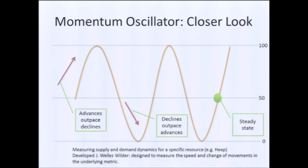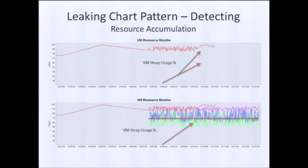Why not just set a threshold directly on the heap size — say, alert at 90%? You could, but you'll get a lot of false positives. Here's an example: a VM oscillating in the 90% range — it goes up to 90, goes down, up to 90, goes down — every time you touch 90 you get an alert. That's not a situation you want. The oscillator abstracts it out, looks at advances and declines, and smooths it out. That's why the oscillator is a better approach. We've used it quite successfully — customers call, say they believe there's a memory leak, and we look at the oscillators to determine if it's actually a leak or a sizing issue.